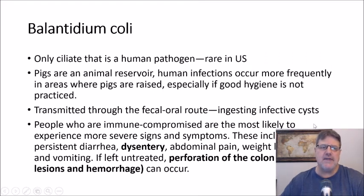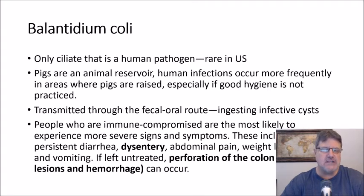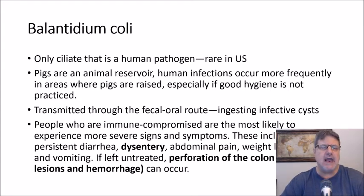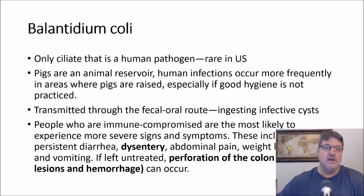Lastly, I want to talk about the one pathogenic ciliate to humans — Balantidium coli. The animal reservoir is pigs or swine, and human infections occur more frequently in areas where pigs are raised, especially where good hygiene is not practiced. It's transmitted through the fecal-oral route via the infective cyst. Although it's rare in the U.S., it's a very serious pathogen with symptoms resembling Entamoeba histolytica. Immunocompromised people are most likely to experience severe signs and symptoms: persistent diarrhea, dysentery, abdominal pain, weight loss, vomiting, perforation of the colon, and hemorrhagic lesions.